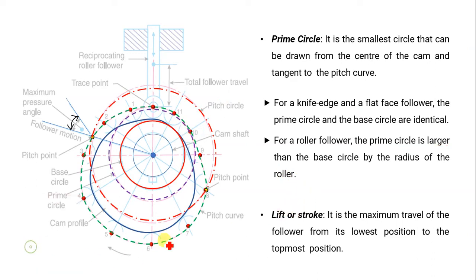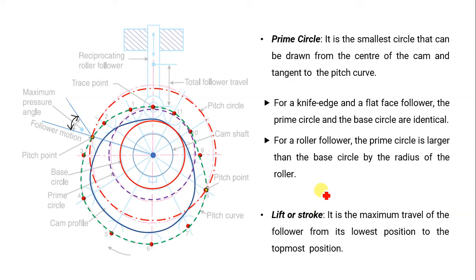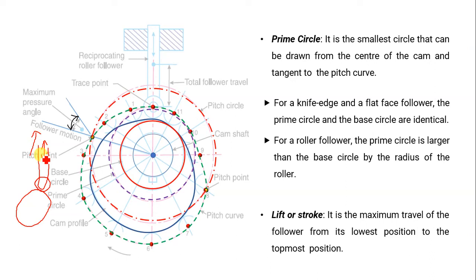The next terminology is lift or stroke. In the cam and follower mechanism, the cam is rotating and the follower is reciprocating — moving up and down. Lift is basically the maximum travel of the follower: the maximum distance from its lowest position to the topmost position. This movement of the follower is called lift or stroke.